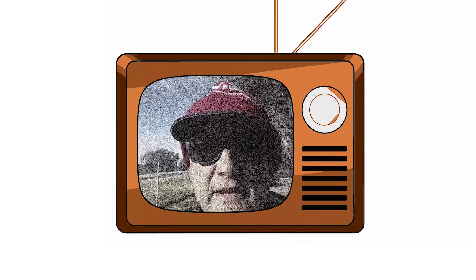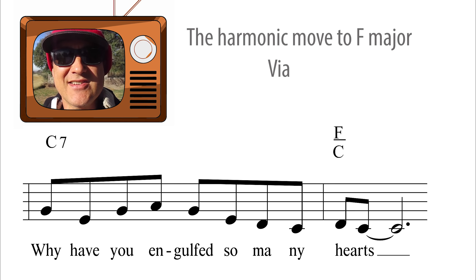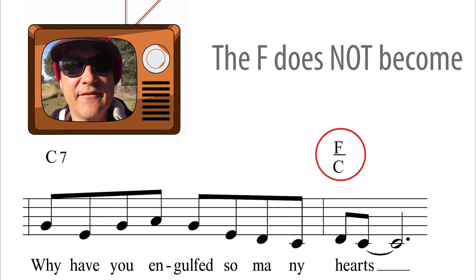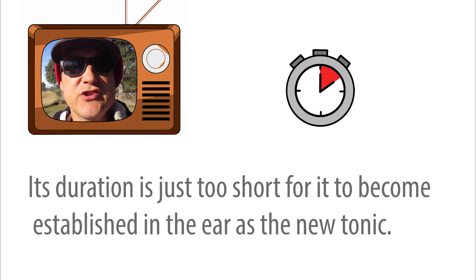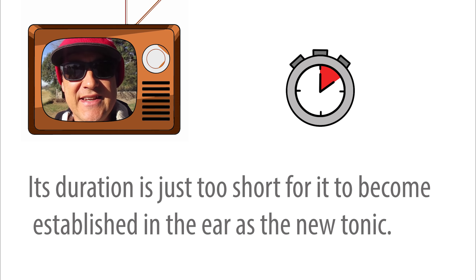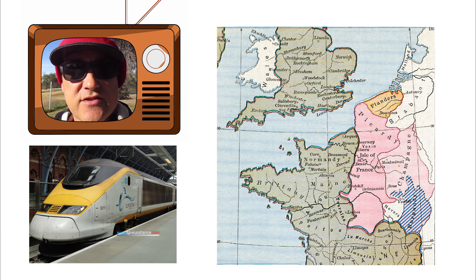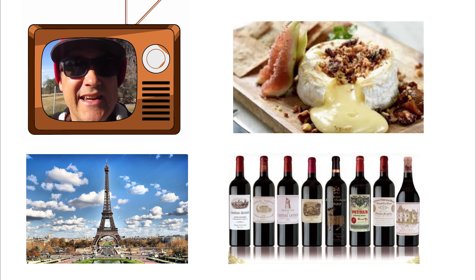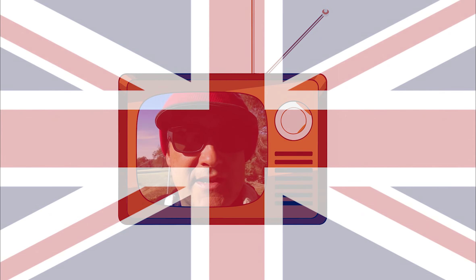Let's stop for a New York minute to explain the enormity of what was just said. The harmonic move to F major via its dominant C7 in the key of C is not a modulation, as the F does not become the home, root, or tonic chord — its duration is just too short for it to become established in the ear as the new tonic. For instance, if I go to France for the day, see the Eiffel Tower and enjoy some runny cheese and fine wine, I do not suddenly become French. I have simply gone on a small trip and then, after a short period of time, return to Old Blighty — slang for Britain.